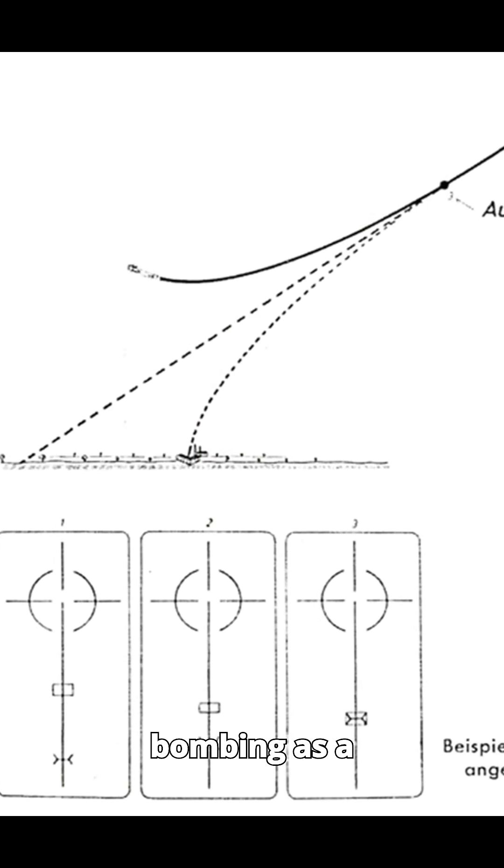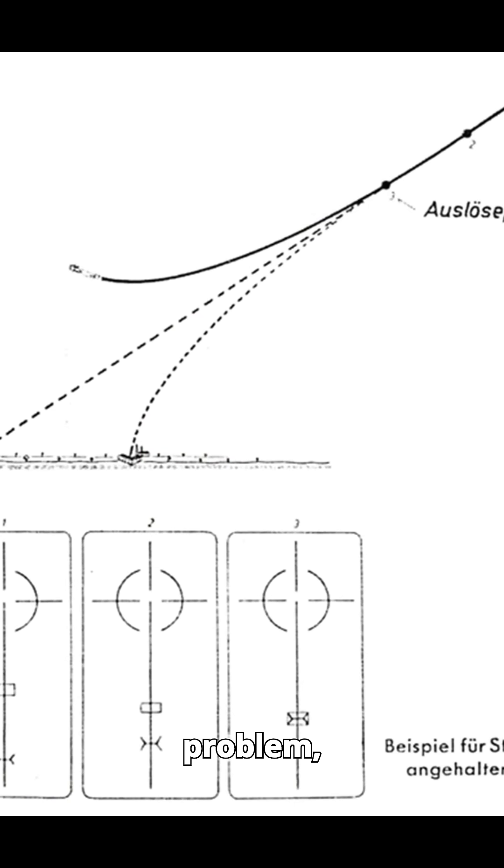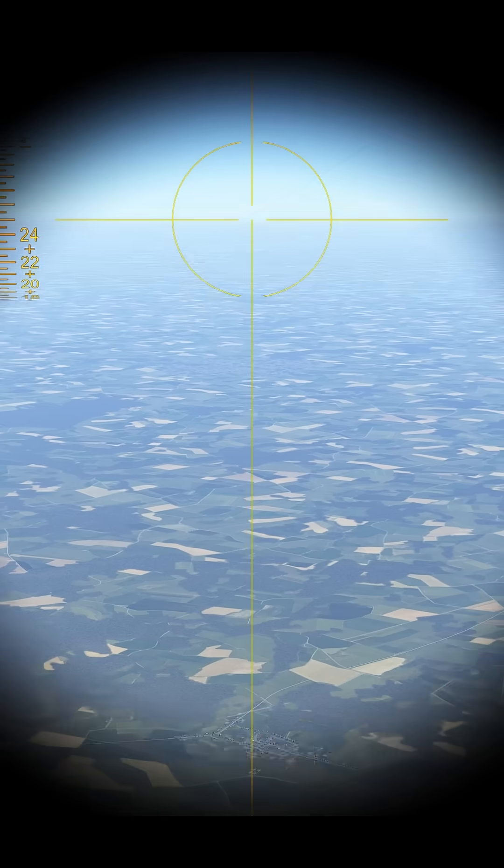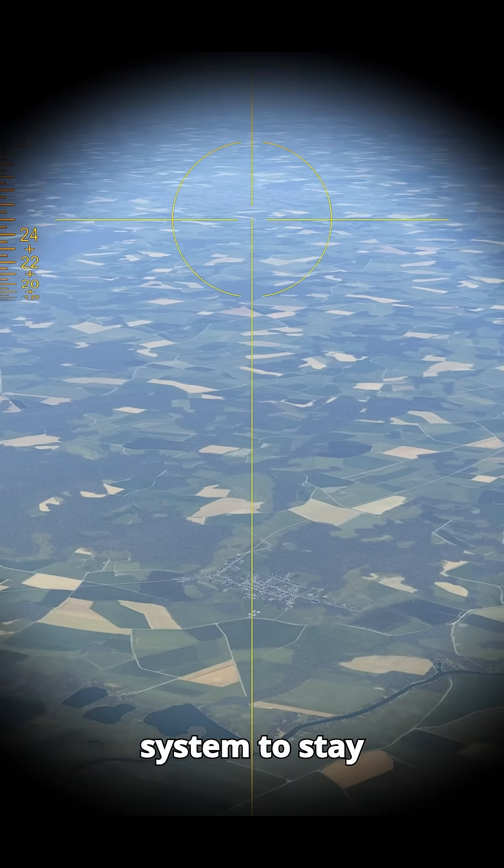The BZA also treated bombing as a flat two-dimensional problem, meaning the aircraft had to maintain a stable dive without rolling or yawing for the system to stay accurate.